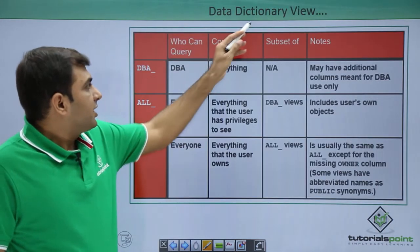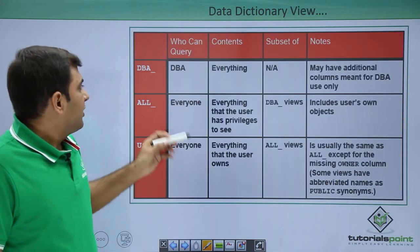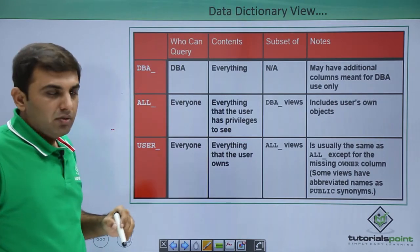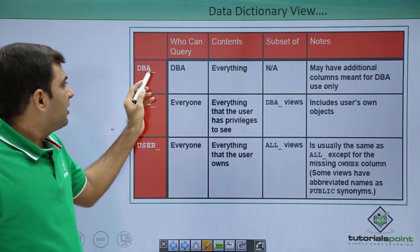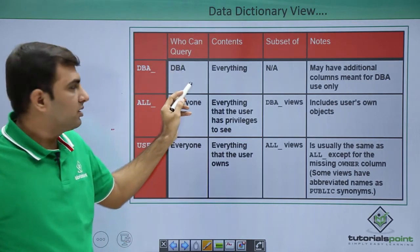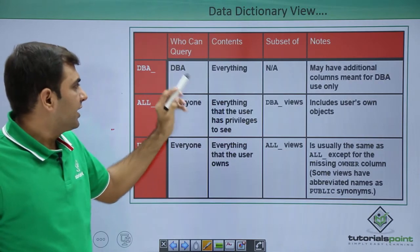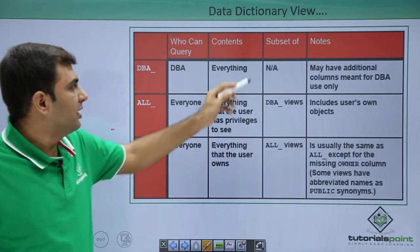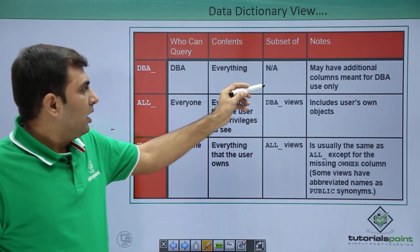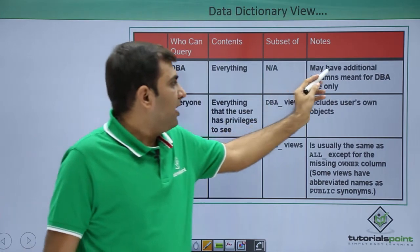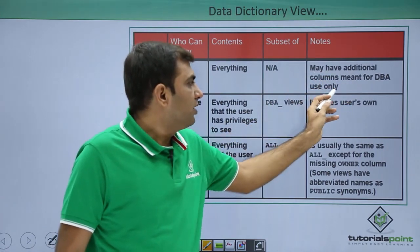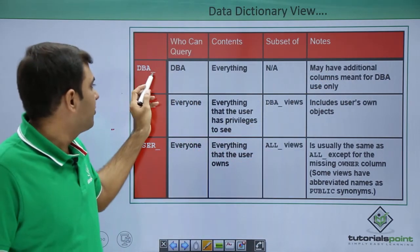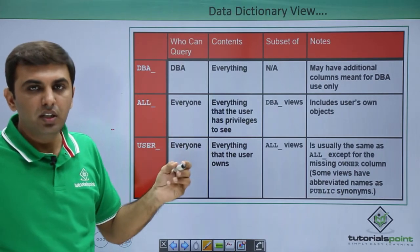There are three kinds of data dictionary views: dba_, all_, and user_. The dba_ view can be queried by DBAs and contains everything. It is a subset of nothing. Some additional columns are present that are meant for DBA use only — for example, when executing dba_users, some additional columns are available.